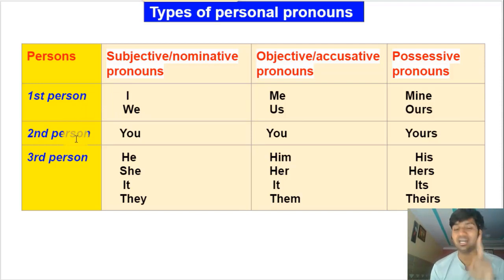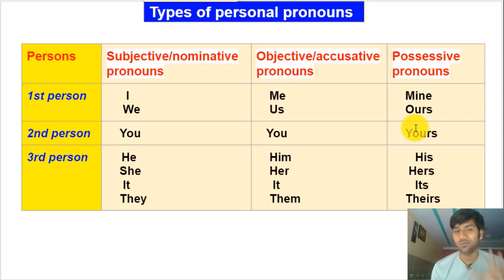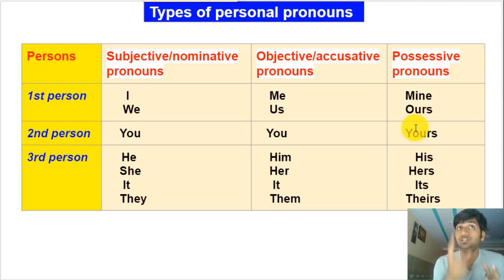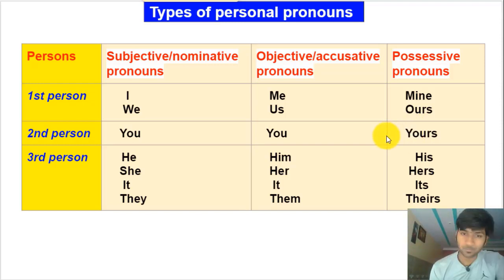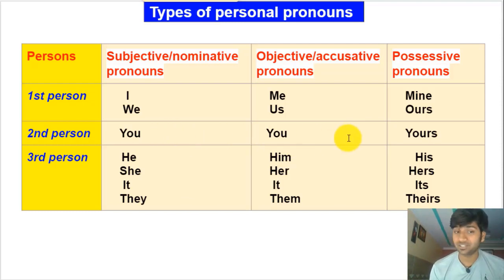In the second person we just have 'you.' It's the subjective pronoun and the objective remains 'you' — it doesn't change. In the possessive it changes to 'yours.' 'You' can refer to just one person or a group of people — you'll understand this by context. So in second person: subjective — you, objective — you, possessive — yours.